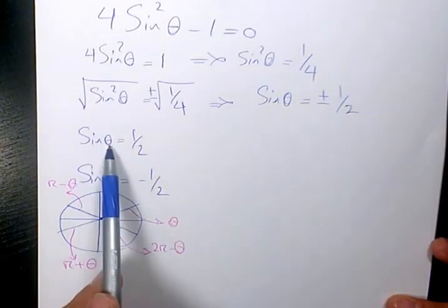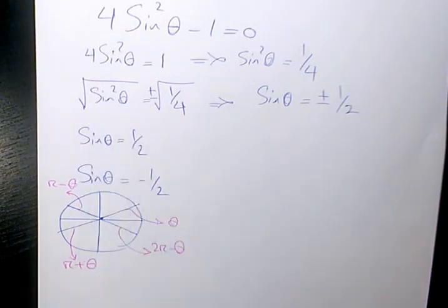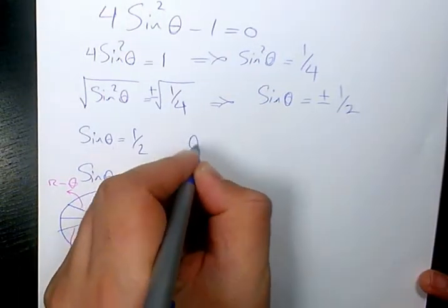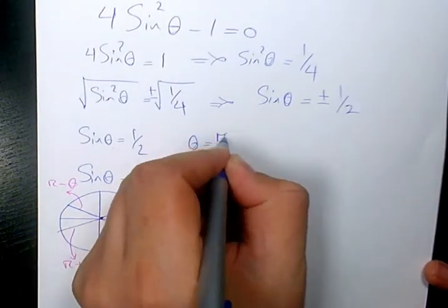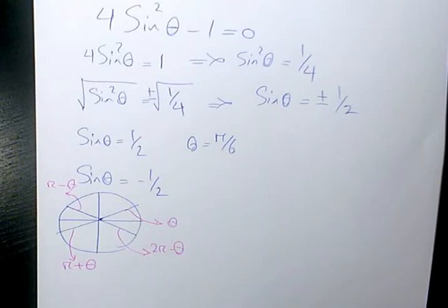So theta, we know sine pi over 6 is 1 over 2, based on the special angles or special triangles. So sine pi over 6, or sine of 30 degrees, is going to be 1 half.